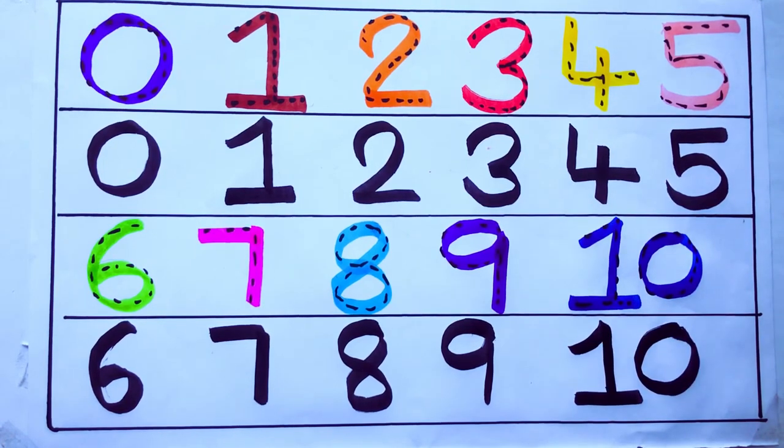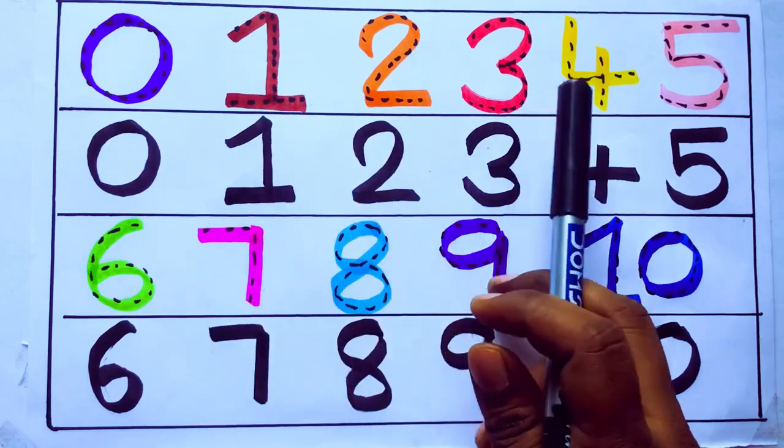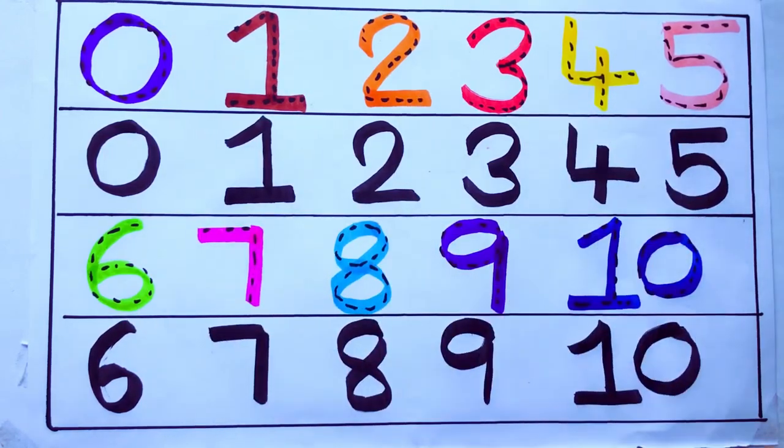One second learning numbers: 0, 1, 2, 3, 4, 5, 6, 7, 8, 9, 10. Okay.